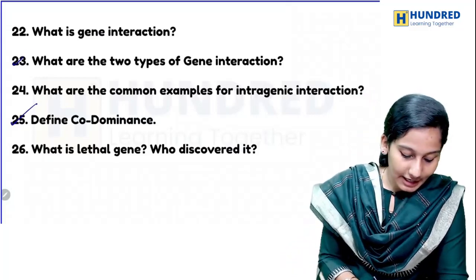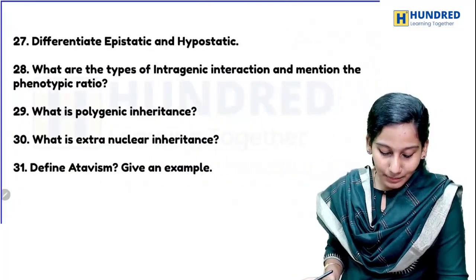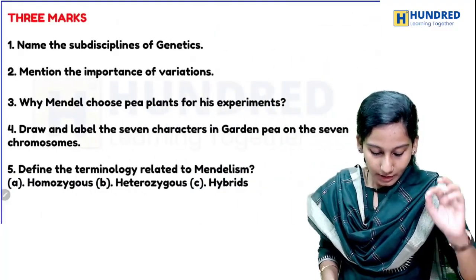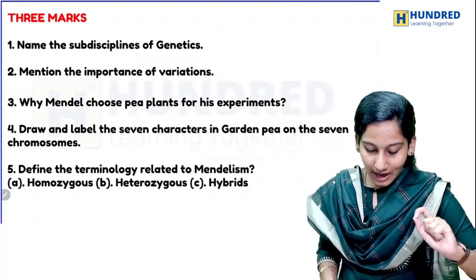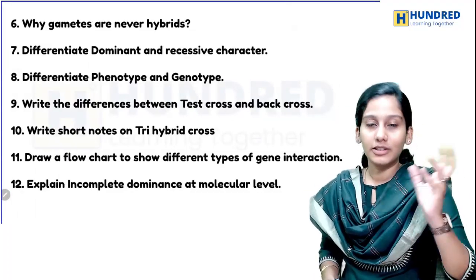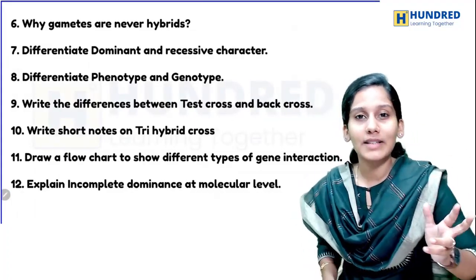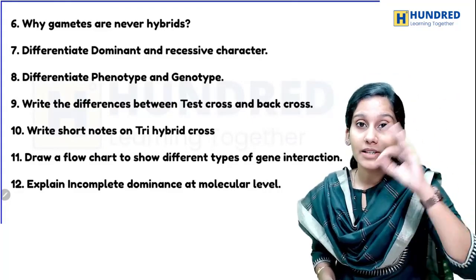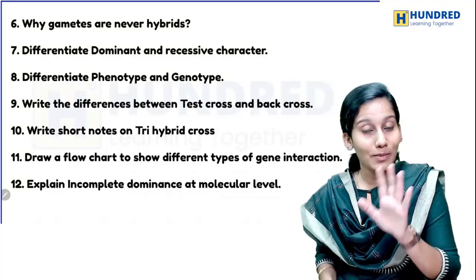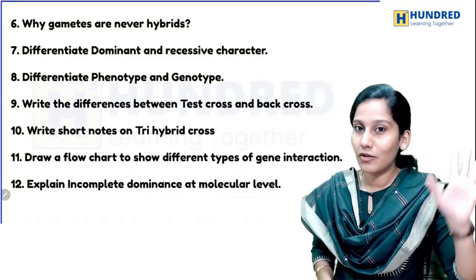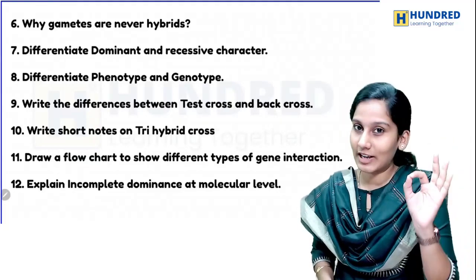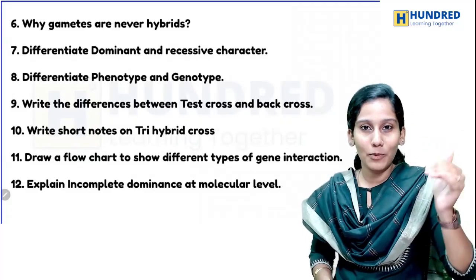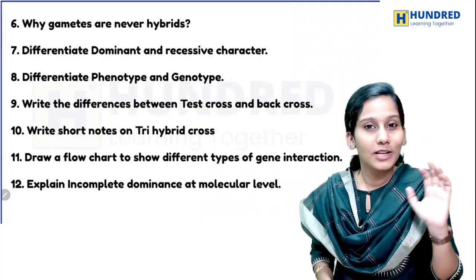Gene interactions and their types with examples are important. Polygenic inheritance — what is polygenic inheritance, what is epistasis — may also be asked as experiments. For co-dominance and incomplete dominance: two marks for brief points, three marks if asked for differences. Paper presentation is very, very important — present differences in a table form.